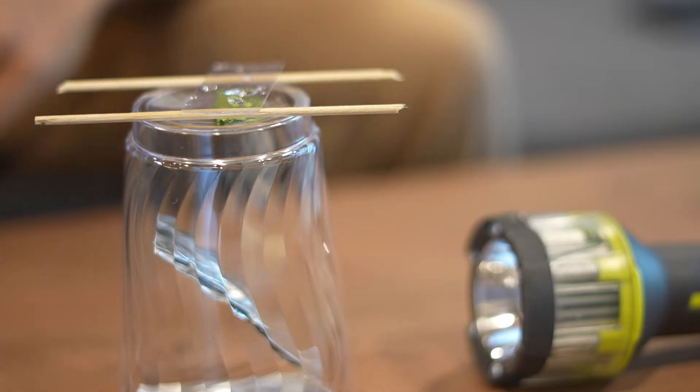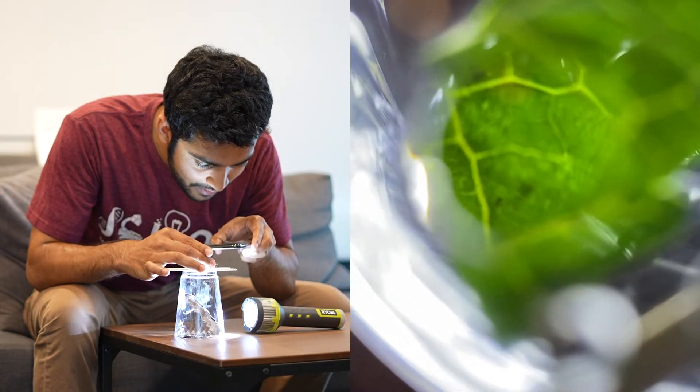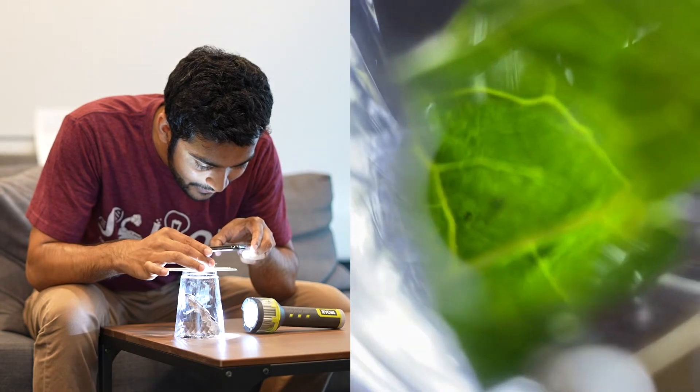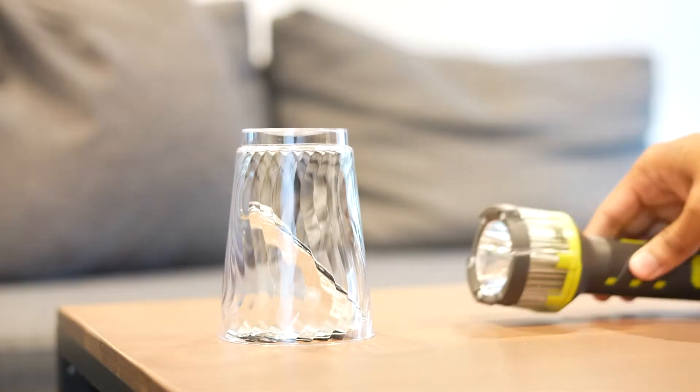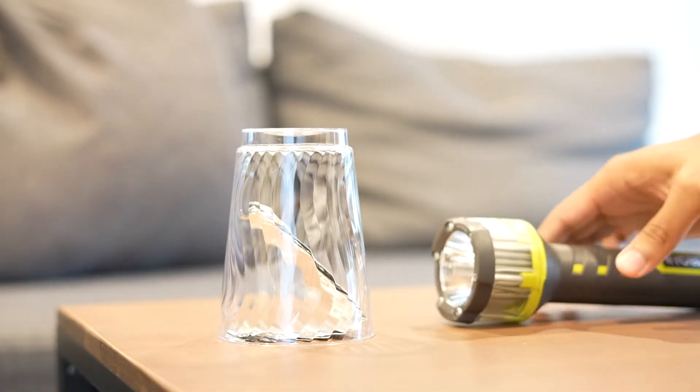Then, figure out a way to hold it above your sample, and you've got yourself a microscope. Whoa. I added this plastic cup aluminum foil flashlight combination to shine light through my sample.